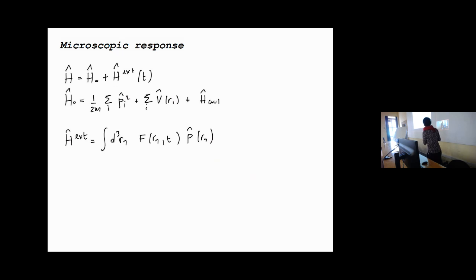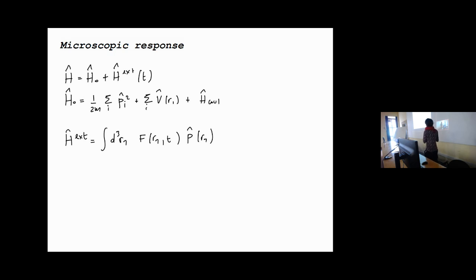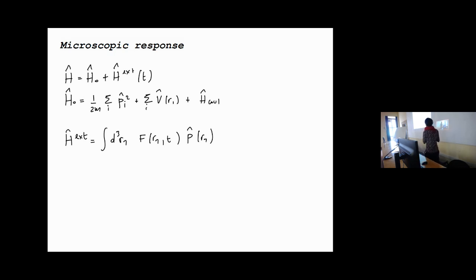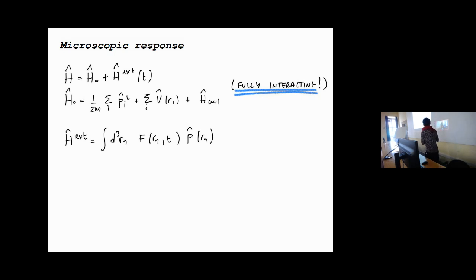We start with our definition of the system. We are in a microscopic world, so we have the Hamiltonian divided into two parts: H0, which may contain all the interactions, and an external perturbation which we suppose is weak and time-dependent. This external perturbation in general can be written as a field that depends on position and time, coupled to an observable of the system. It is worth remembering that H0 is not necessarily a non-interacting Hamiltonian; it may be fully interacting in principle.